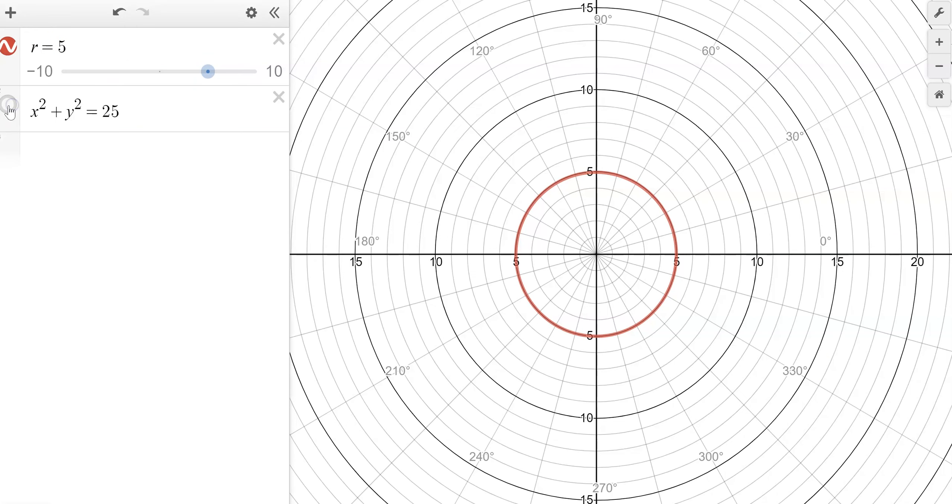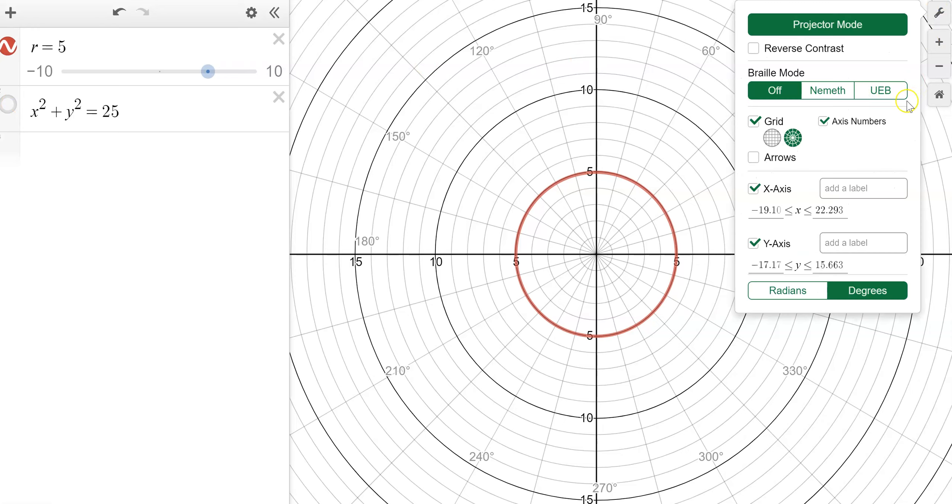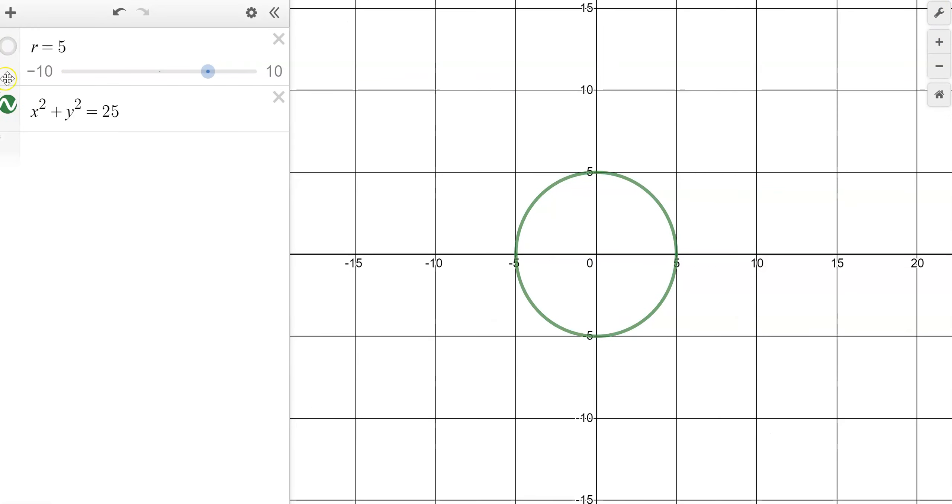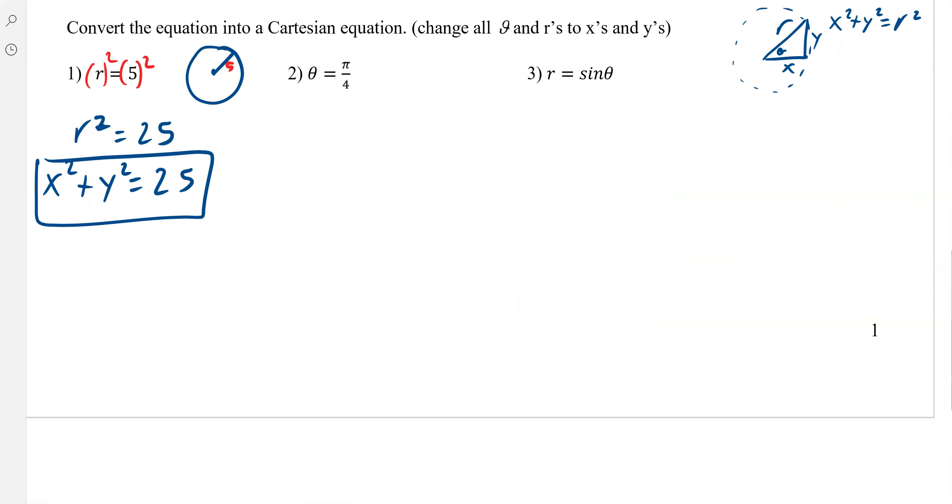So, R equals 5 is our polar. And then switching it to rectangular, you can see they're the same. See? Doesn't matter which one I use, they're exactly the same graph. So, we're good. Okay.